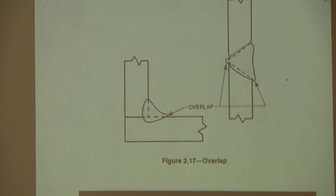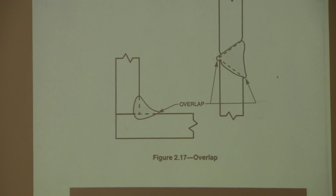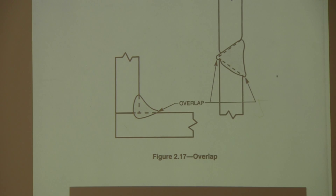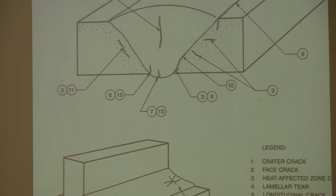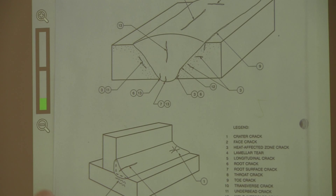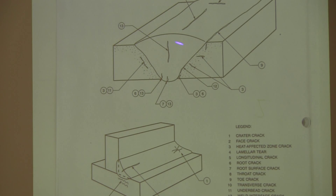There's another discontinuity called overlap — that's where the weld metal kind of overlaps the edge and doesn't really fuse right there. That can be a discontinuity or a defect. Cracks — we talked a lot about cracks in metallurgy. Cracks are unacceptable. There's a variety of types: centerline cracks, cracks along the edges, and all different kinds, but the most important thing is that cracks are unacceptable according to the codes.